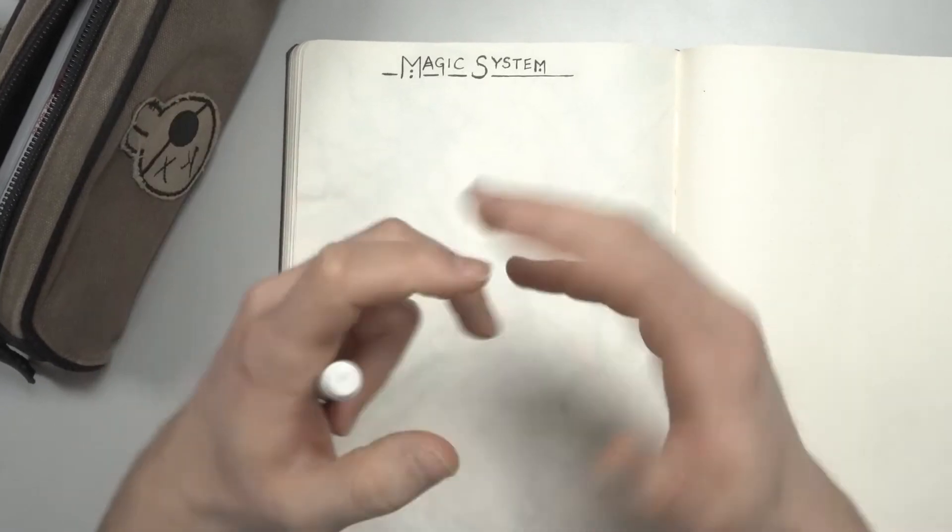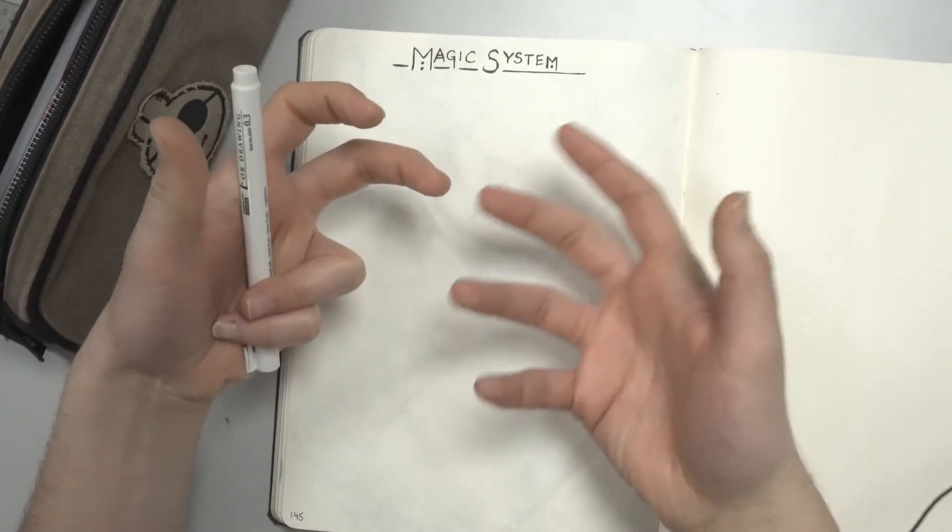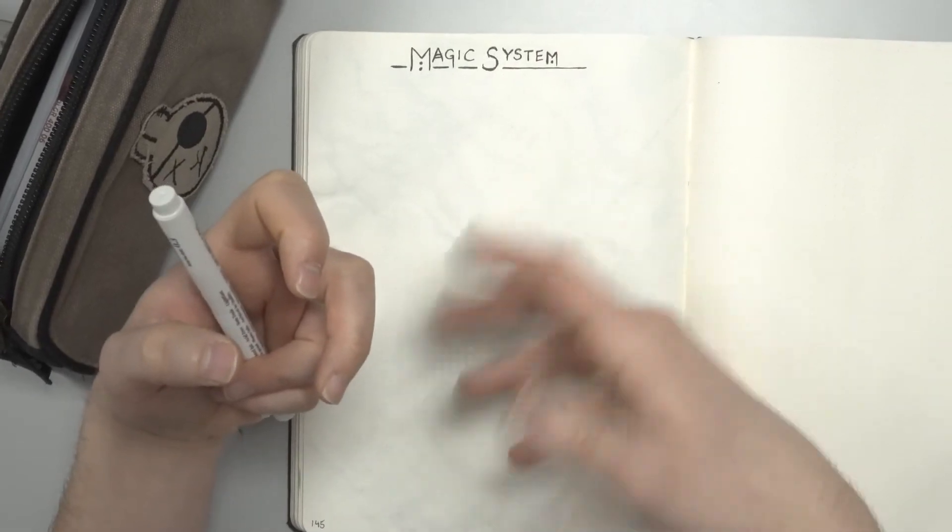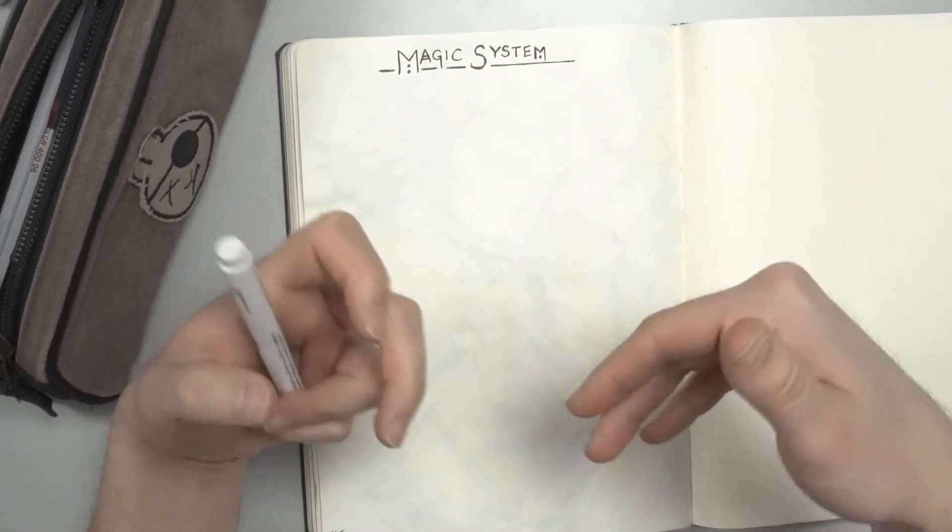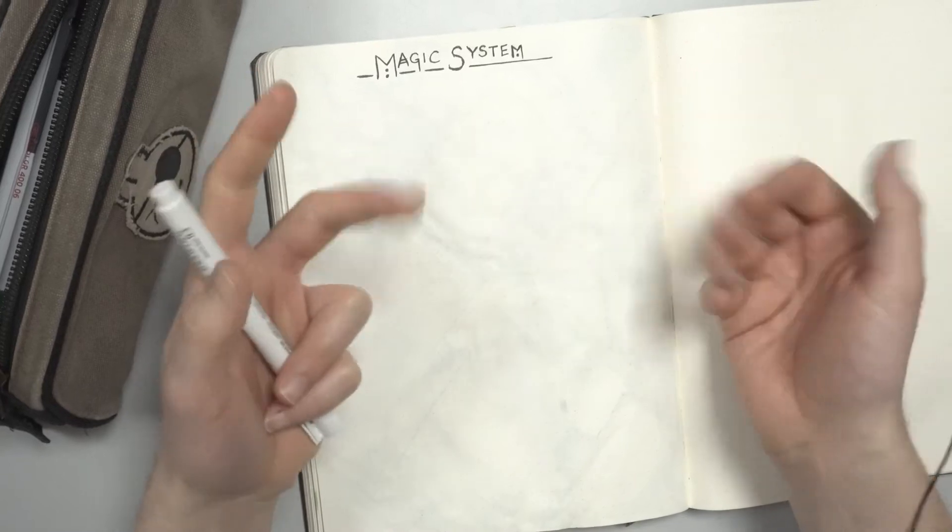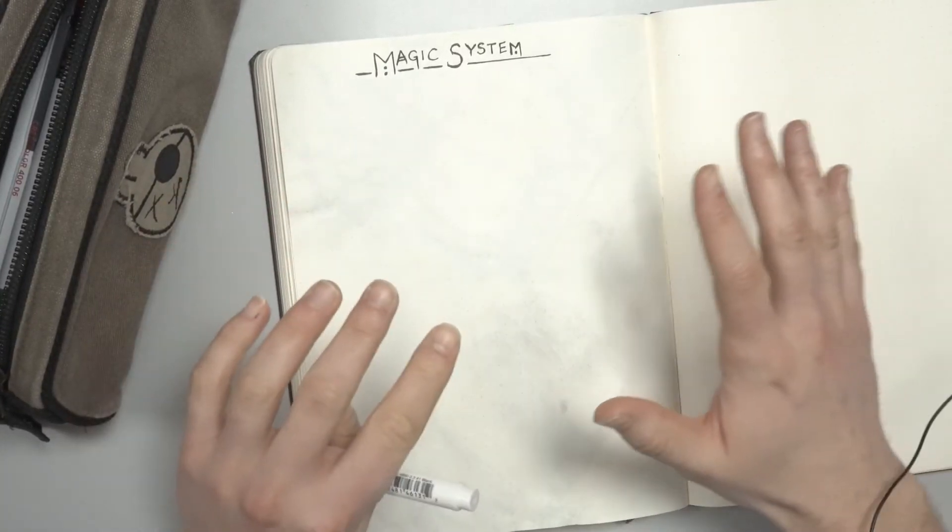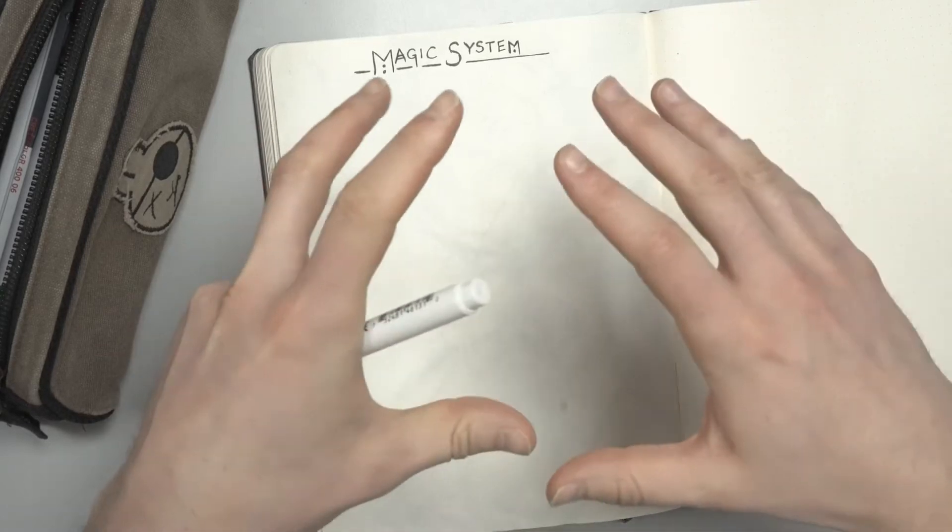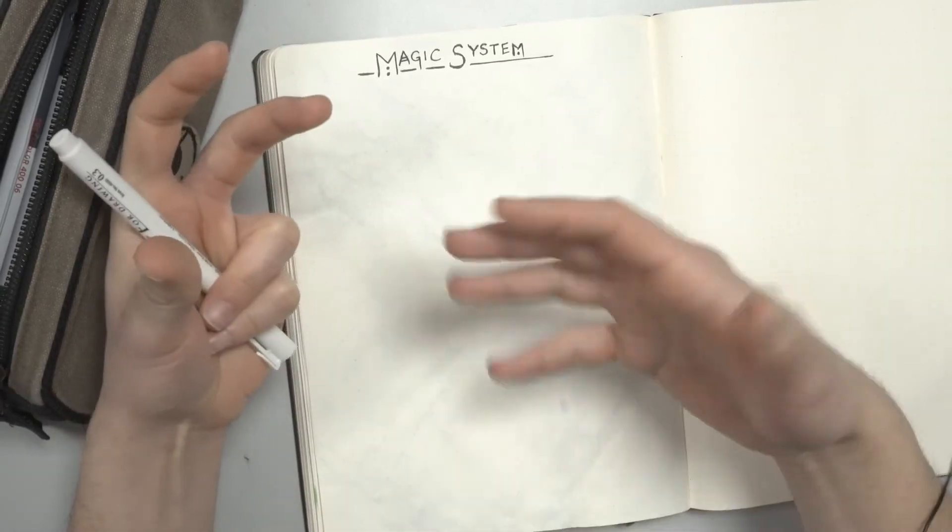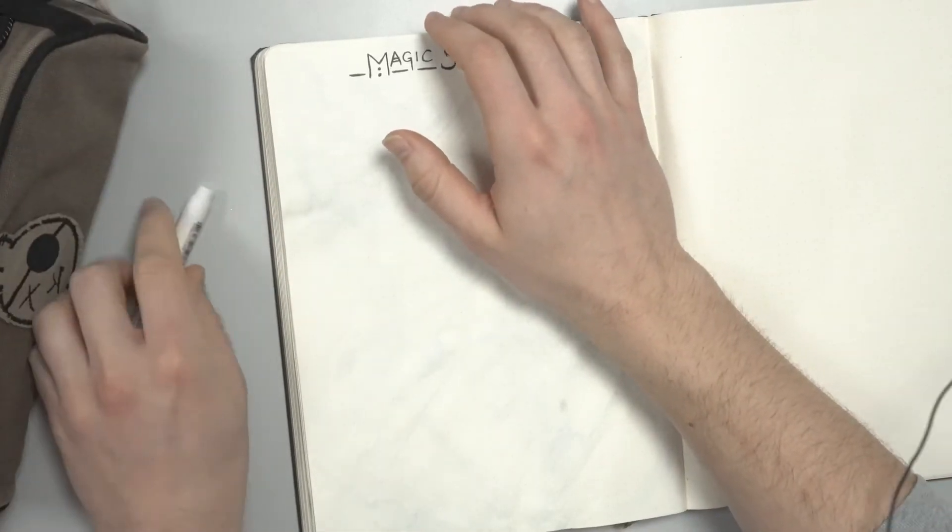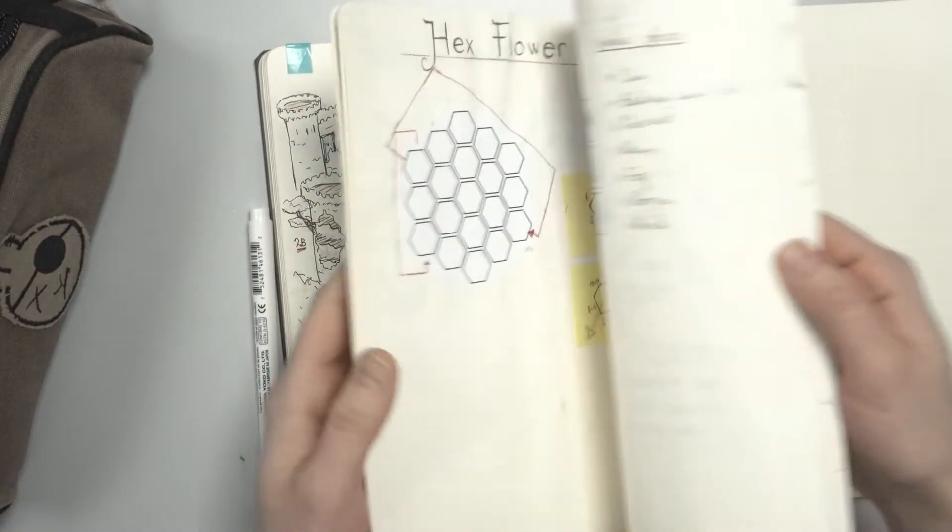Magic systems are fundamentally resource management systems. The same with inventory systems and in many games also health and injury systems. I therefore want all my resource management systems to be similar at the core and with that I want to look back at my inventory system that I made in episode 29.